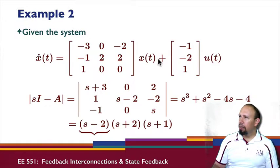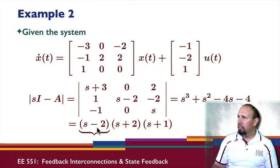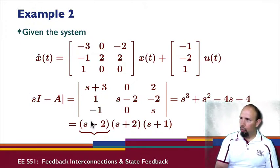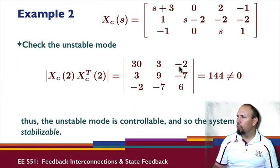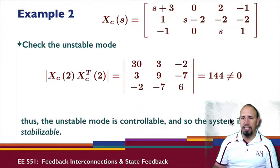All right, example number two. I'm given the system. I notice that my system is unstable. When I plug that into Xc and compute the determinant of Xc Xc transpose, I can see that I get the value 144, which is not zero. Therefore that unstable mode is controllable and so the system is stabilizable.